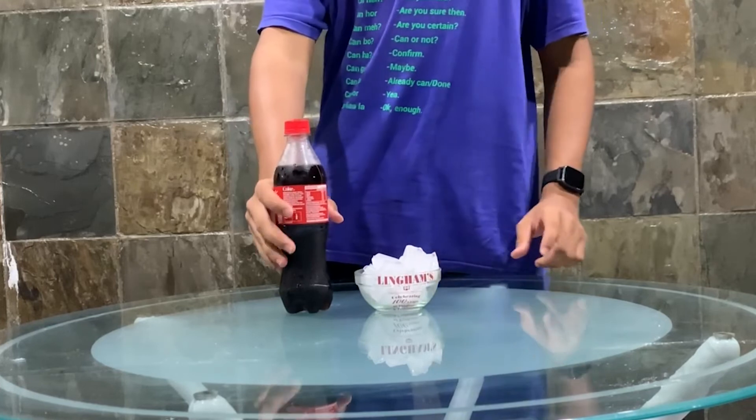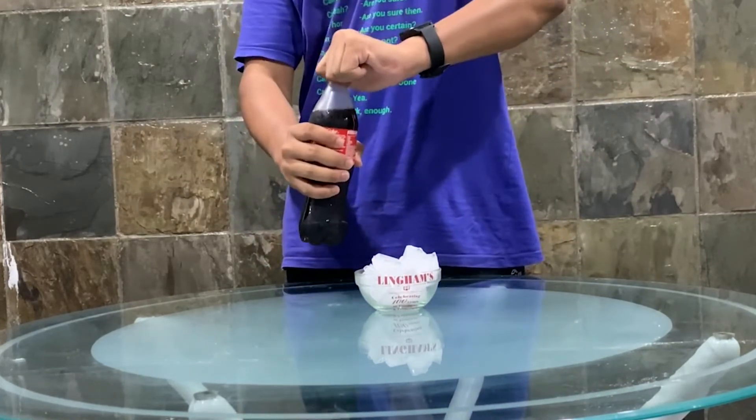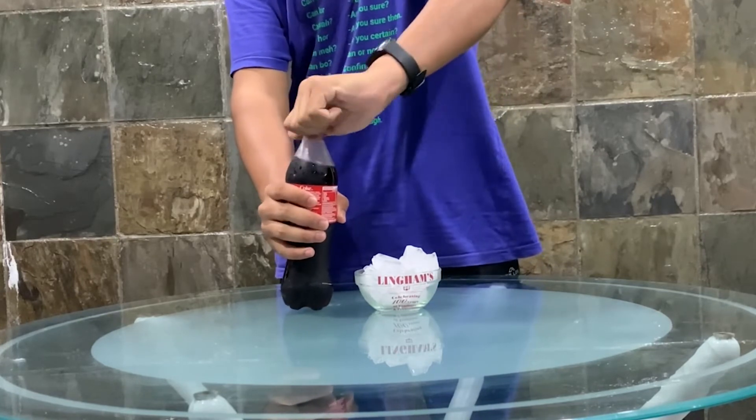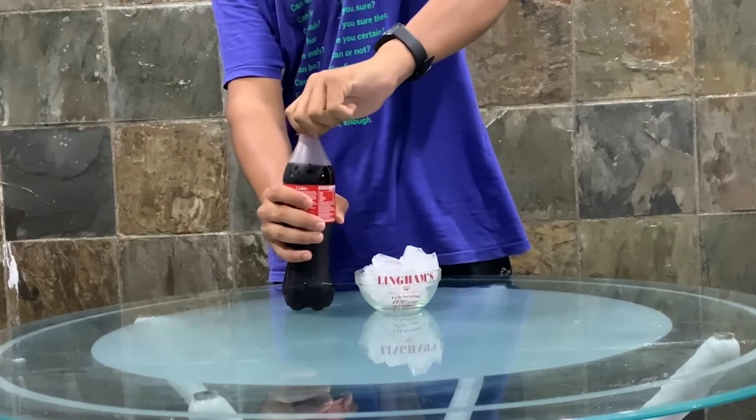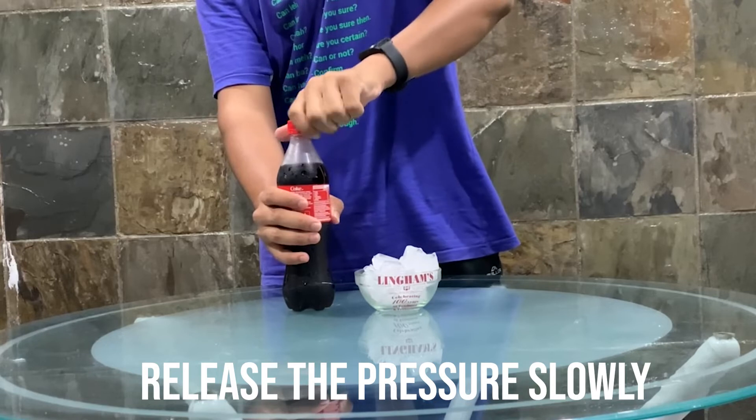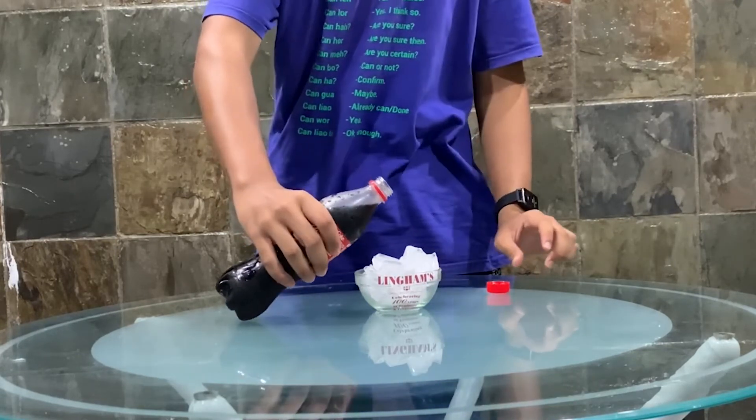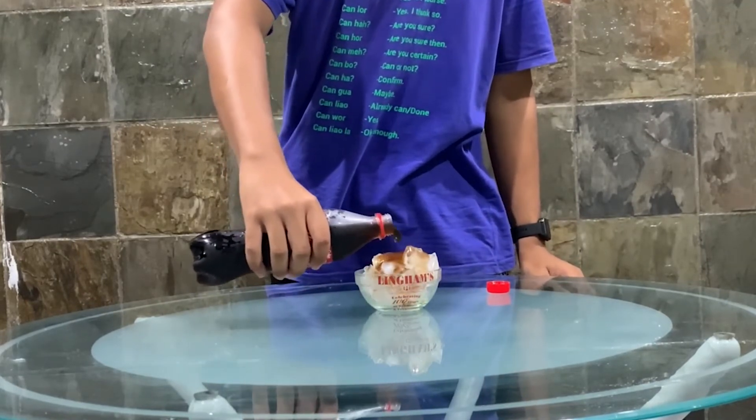Next, take the bottle out carefully without shaking it or agitating it around too much. Now, it's the moment of truth. Pour it out onto a cold steel bowl and watch the ice grow and form just like that. Isn't that cool?